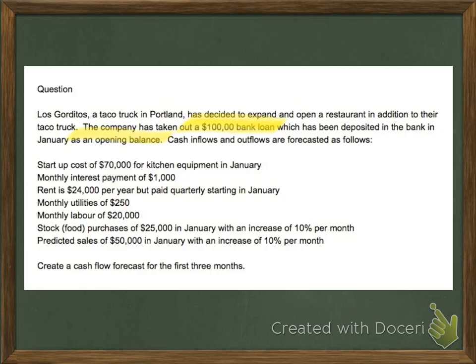Startup costs — that's money going out, that's an outflow. Interest payment — outflow. Rent — outflow. Monthly utilities — outflow. Labor — paying my workers — outflow. And stock: I'm a restaurant, I have to buy food — all outflows. And finally I have an inflow: predicted sales, the sales I think I'm going to have. So I've highlighted the most pertinent information and can quickly fill in my cash flow forecast.